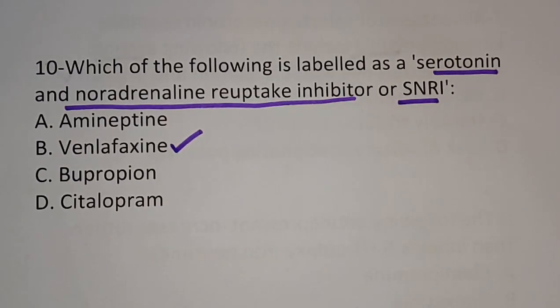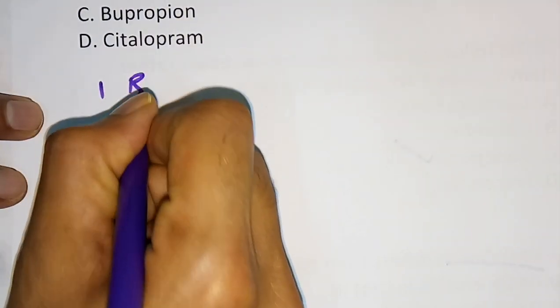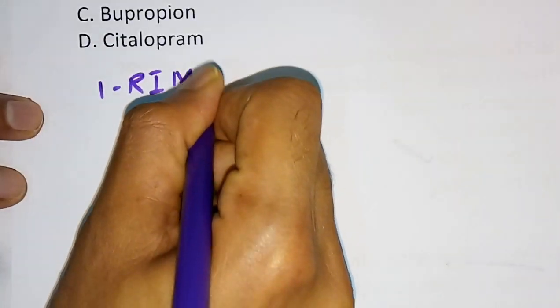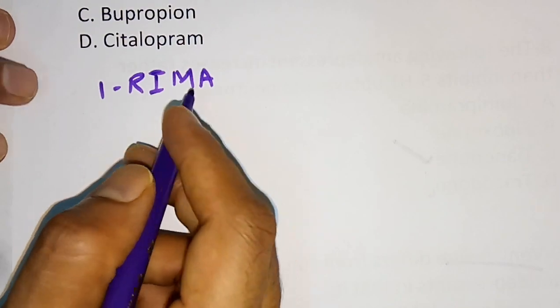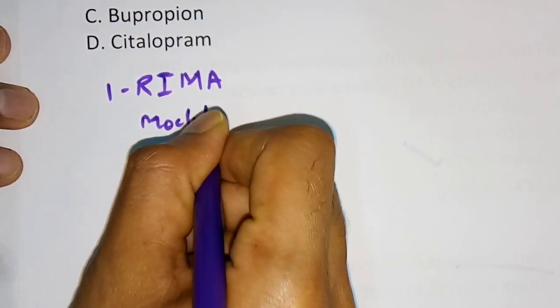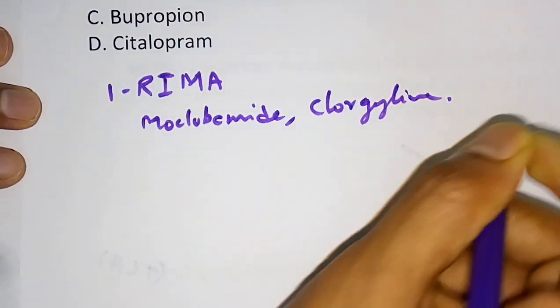Those were the important multiple choice questions from this chapter. Now we will see the classification of antidepressants, which is very important for competitive exams. Antidepressants are classified into: first, reversible inhibitors of MAO-A, that is RIMA. Examples are Moclobemide and Clorgyline — both coming under this class.